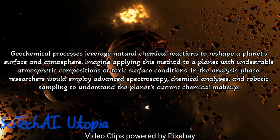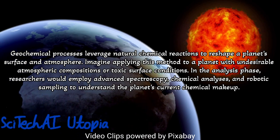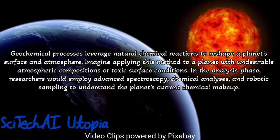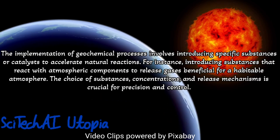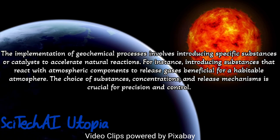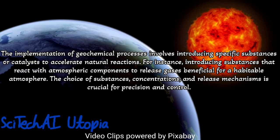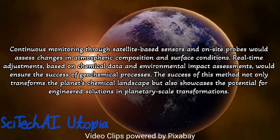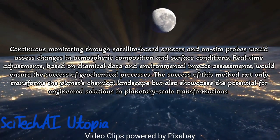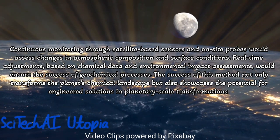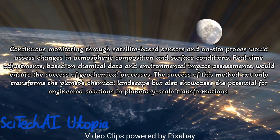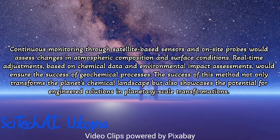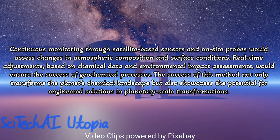Method 15: Geochemical Processes. Analyze the planet's current geochemical processes, including weathering, erosion, and mineral recycling, to understand natural mechanisms that can be accelerated or modified. Develop a comprehensive plan for geochemical interventions, considering the introduction of specific minerals, catalyzing chemical reactions, or altering the rates of natural processes. Implement advanced technologies to carry out targeted geochemical modifications, potentially involving autonomous robotic systems or controlled releases of chemical agents. Conduct ongoing monitoring of geochemical changes through satellite observations, ground-based sensors, and sample analyses. Address potential environmental consequences through adaptive management strategies based on real-time data and feedback.